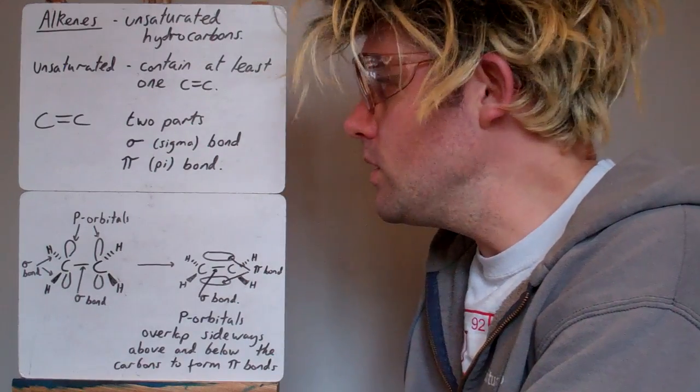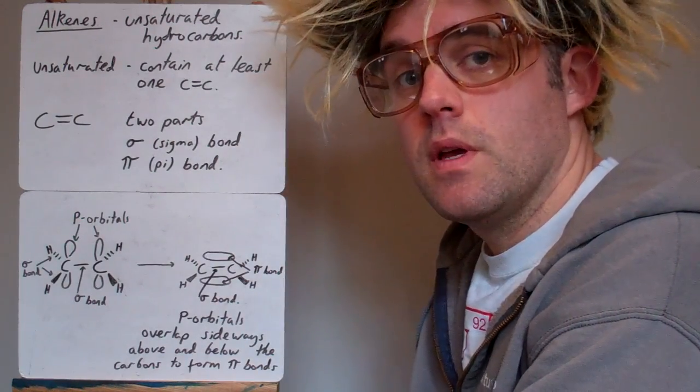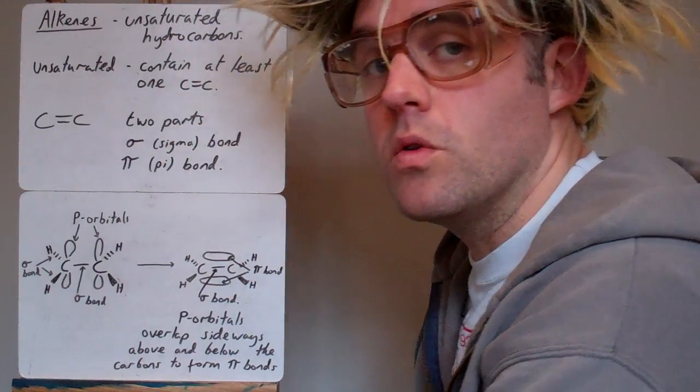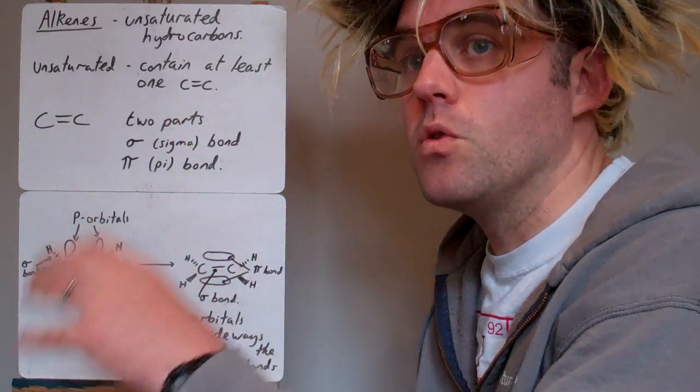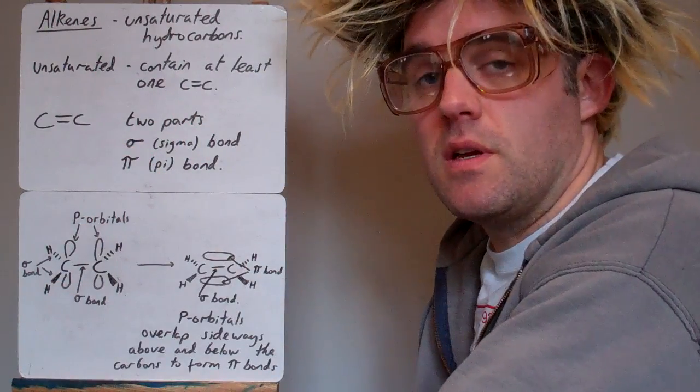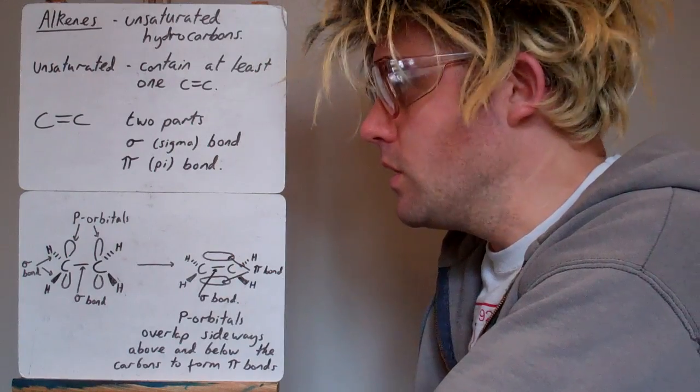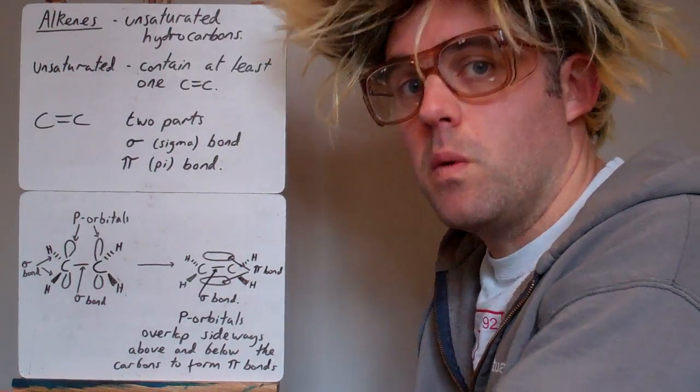What is a double bond? It contains two parts, a sigma bond and a pi bond. Sigma bonds are like all the single bonds you've seen before, a pi bond is an extra bond on top of that. A pi bond is not the same strength as a sigma bond, it's much weaker. So a double bond is not twice the strength of a single bond, it's a single bond with a bit extra.